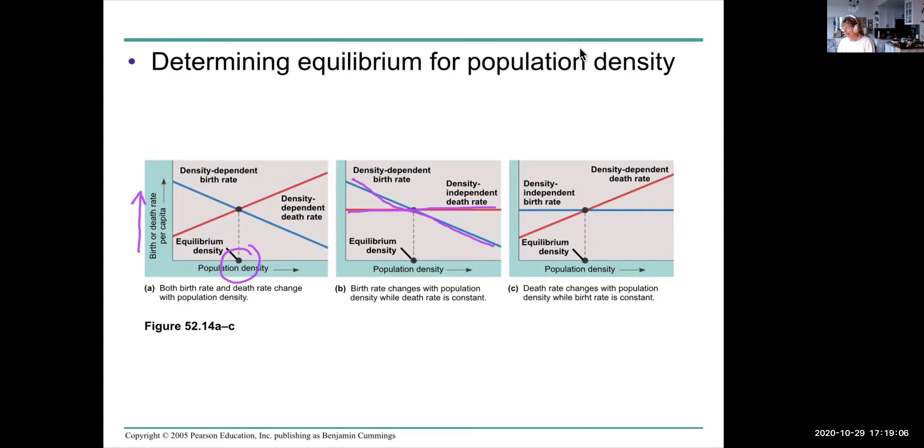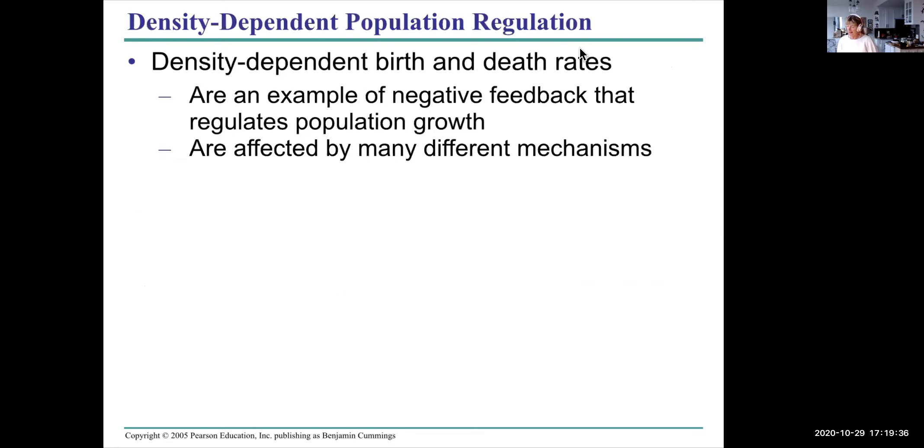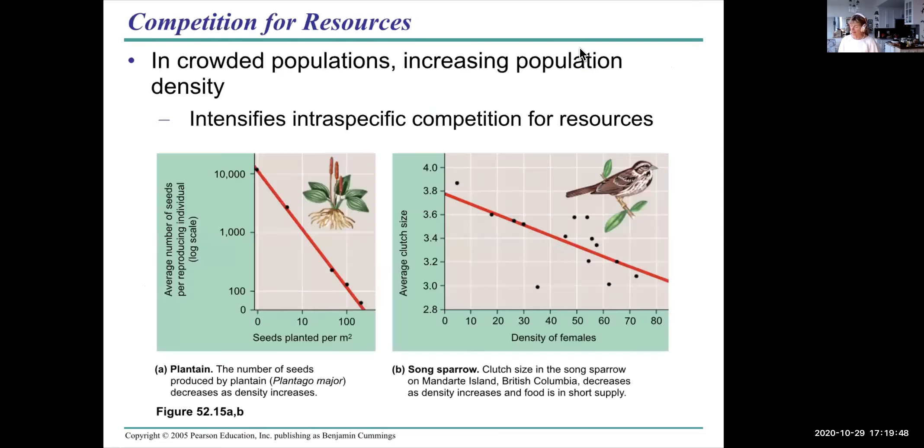It could be that as density goes up the organisms are more territorial. In other cases the birth rate stays the same but the death rate is dependent on density. The death rate goes up when the density goes up usually because resources become more limited and there's more starvation in the population. Density dependent birth and death rates are an example of negative feedback and that regulates population growth. They're affected by many different kinds of mechanisms.